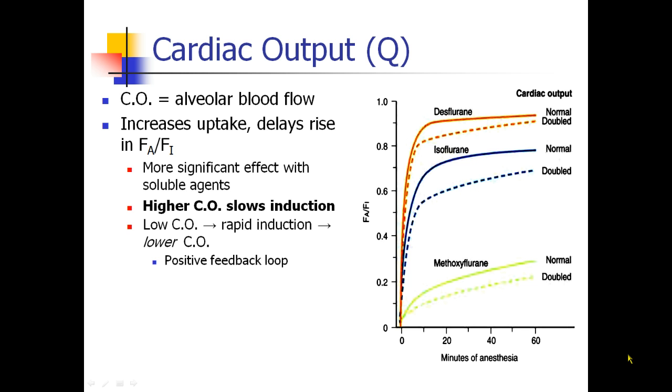The second factor was cardiac output, or pulmonary blood flow, which are the same thing. And we know that as cardiac output increases, uptake increases, and this slows induction.